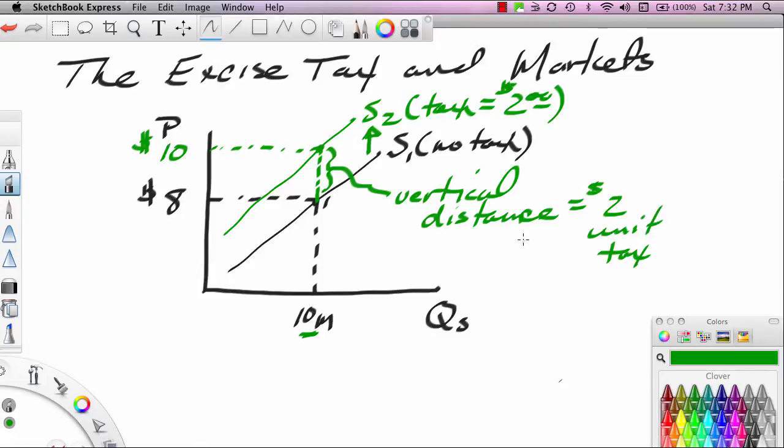Now if the tax is based on a percentage basis, say a percentage of the price, you'd get the same basic outcome. The supply curve could be read either shifted to the left or shifted upward, but this would not be a parallel shift. If there is a percentage tax, not a fixed dollar amount tax, the shift would be non-parallel.